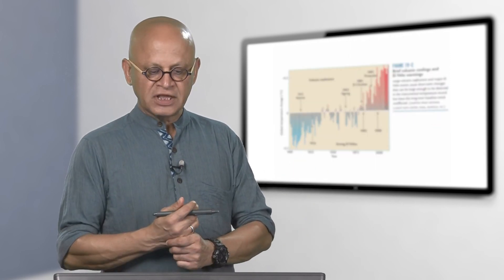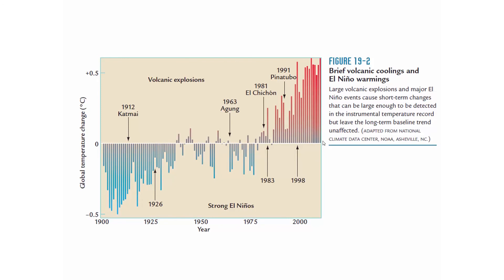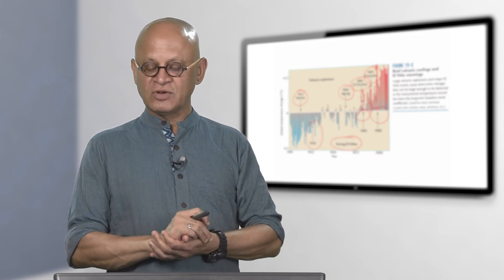The brief volcanic coolings that happen are natural variability. Now showing the same figure with volcanic eruptions: Katmai 1926, strong El Niño events, the Pinatubo eruption, El Chichon eruption. As expected, when strong El Niño happens there is a local spike in warming; when a strong volcano erupts there is a local cooling; local warming due to El Niño; local cooling due to volcano. So natural variability produces these ups and downs in global warming — global warming happening does not mean natural variability goes away.